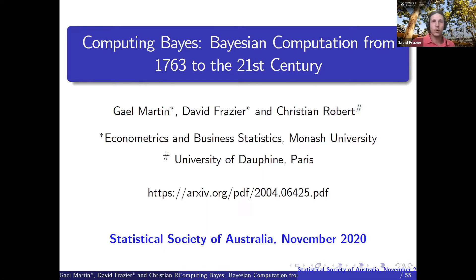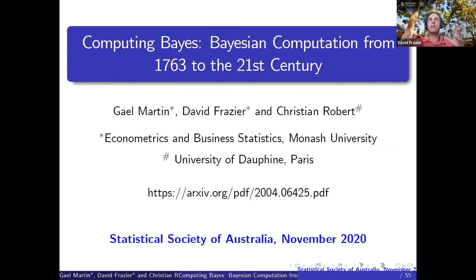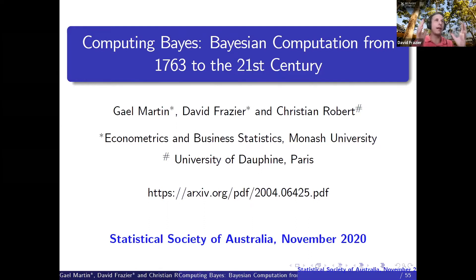For those of you who don't have the benefit of knowing Gail, she is a professor of econometrics at Monash University and a recent fellow of the Australian Academy of Social Sciences. Her primary interests lie in statistical methods for complex dynamic models in economics and finance, with the development, application, and validation of Bayesian simulation-based methods really being central to her research, both within an inferential setting and as they pertain to prediction. Most of her research has been funded by the Australian Research Council.